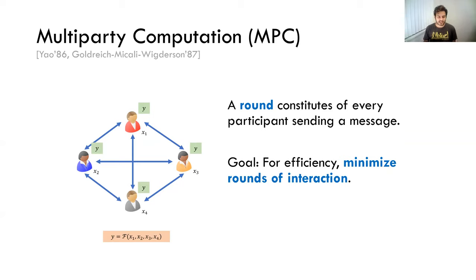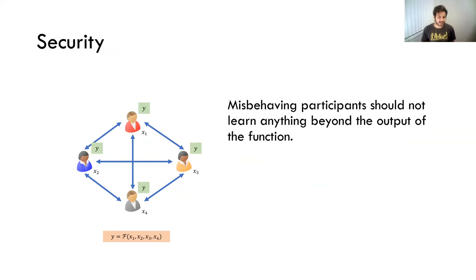Obviously, without any sort of security properties, this can be trivially done in a single round by parties simply sending their inputs to one another. So what is the security property that we need? Intuitively, we want to say that even misbehaving participants shouldn't learn anything beyond the output of the function. MPC, it turns out, comes in many flavors.